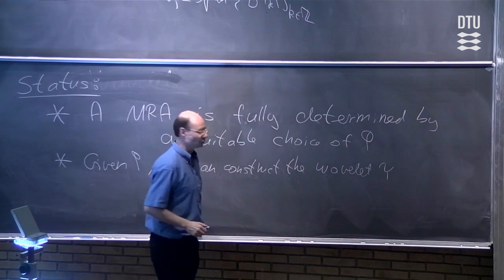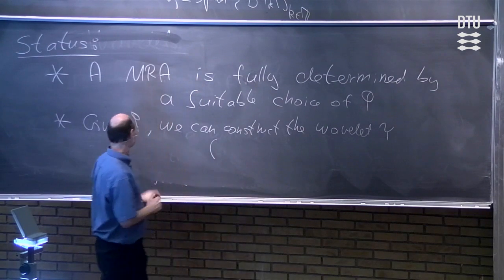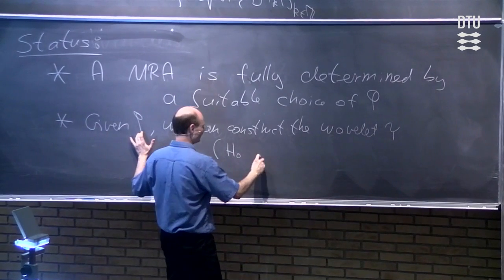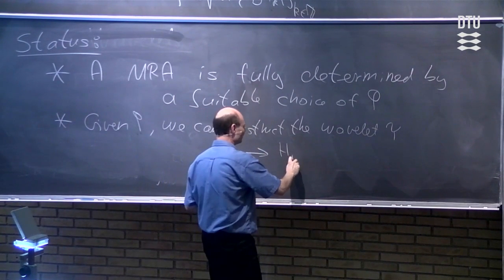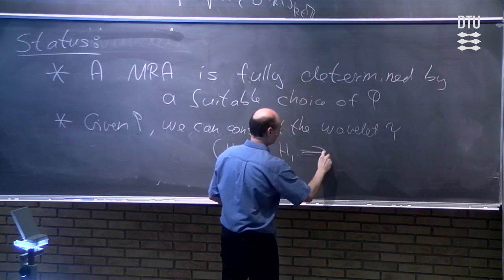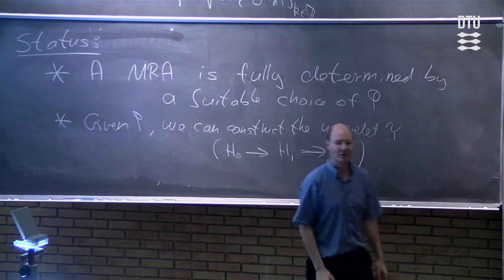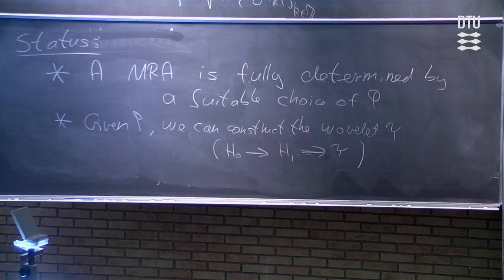The way we are doing that is exactly as I described in the first part of the lecture. We start with the function φ and then we construct the function h₀. And then after we have the function h₀, we find the function h₁. And when we have the function h₁, we can construct the function ψ. So do you think we have completed the program now, or is there something in the wavelet analysis that we still need to analyze? In other words, are you happy with these two statements?